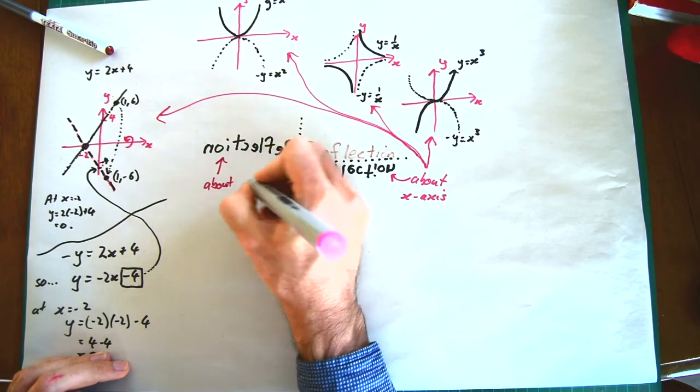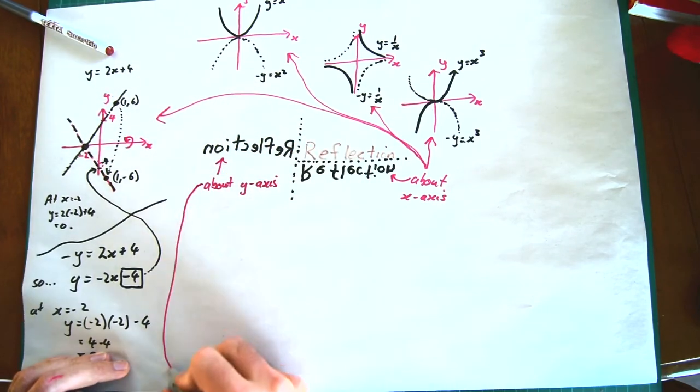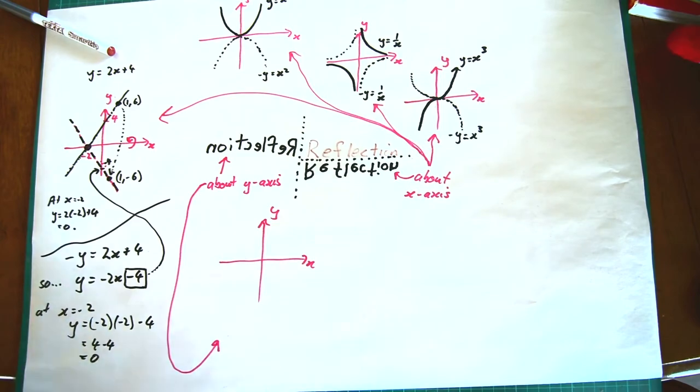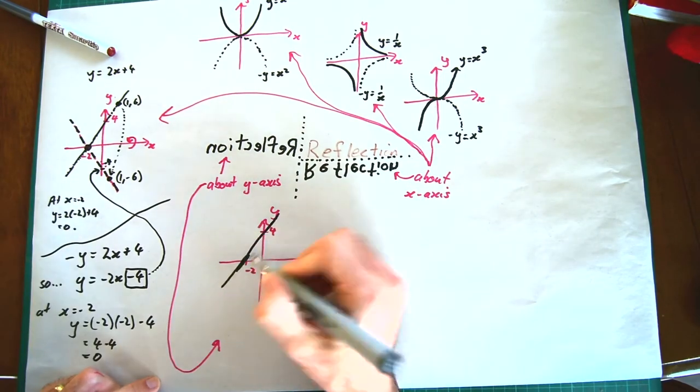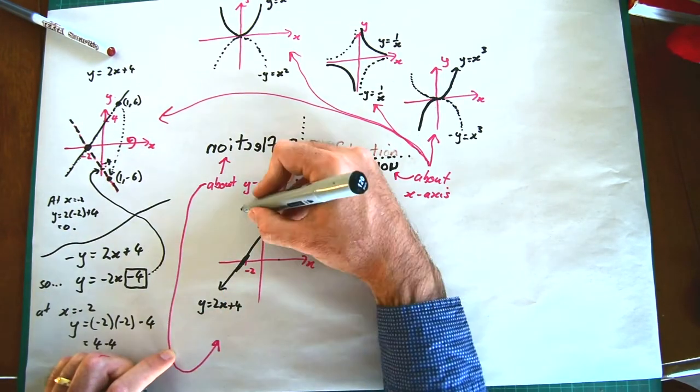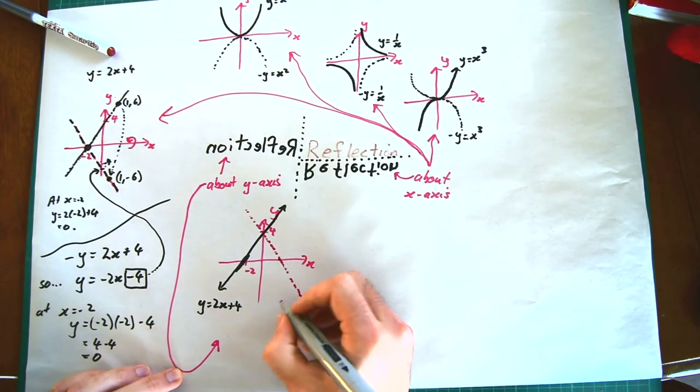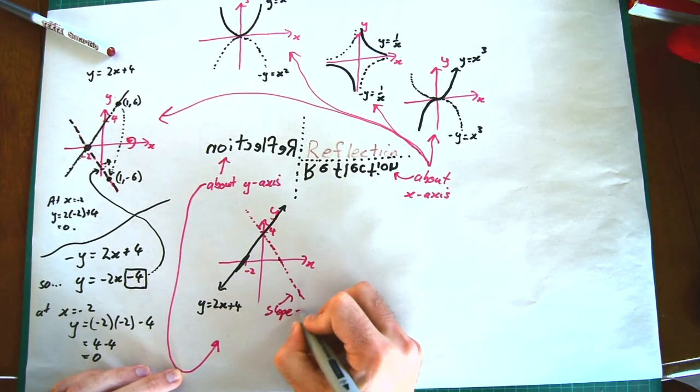Supposing we wanted to do a reflection about the y-axis, that is to say we want the y-intercept to stay the same, but we want the curve to flip from left to right. We want our positive x values to become negative and we want our negative x values to become positive.